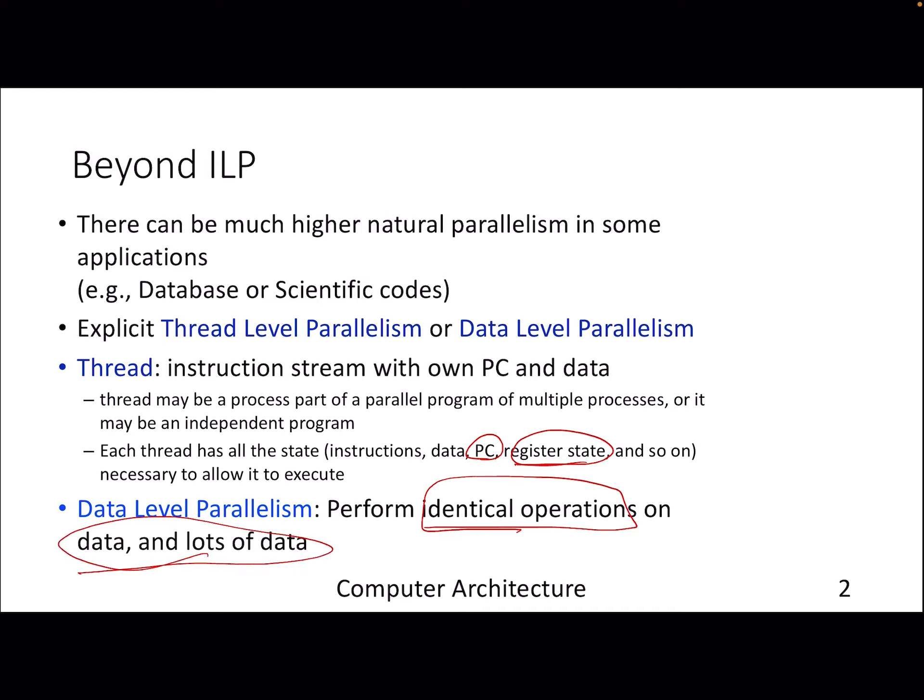Now we can assume there are multiple such instances that are active at a given point of time. The goal is to perform similar or same operations but on large amounts of data, and we need mechanisms through which the front end of the processor and the entire pipeline should be able to handle multiple threads in one go, so that we can extract data level parallelism at the hardware level.